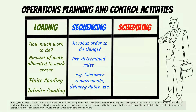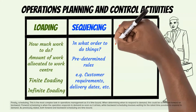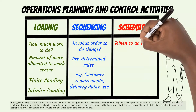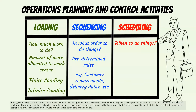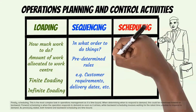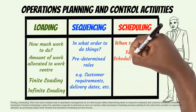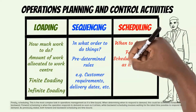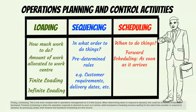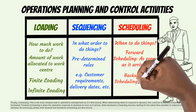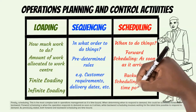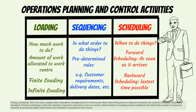Finally, scheduling. This is the most complex task in operations management as it is time-bound. When determining when to respond to demand, this could be scheduled forward or backward. Forward scheduling is when the operation responds to demand as soon as it arrives, while backward scheduling involves waiting for the latest time possible to respond to demand. Both forward and backward scheduling are time-bound.